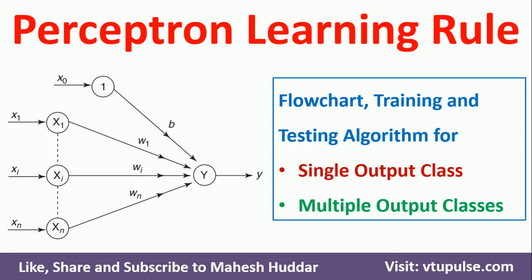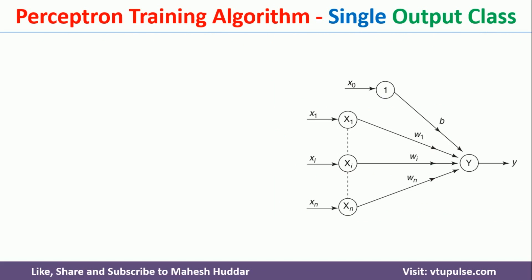Hi, welcome back. In this video, I will discuss the flowchart, training and testing algorithm of the perceptron training rule by considering single output class as well as multiple output class. Now, take an example of this particular perceptron network where we have n number of input neurons and y is the only output neuron, and this one is the bias.